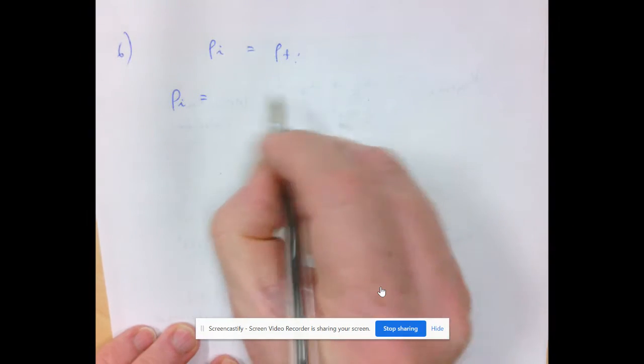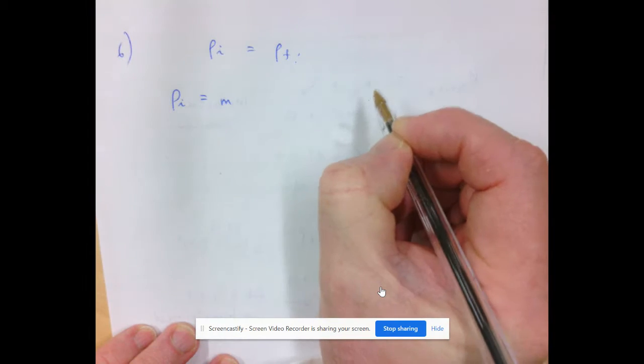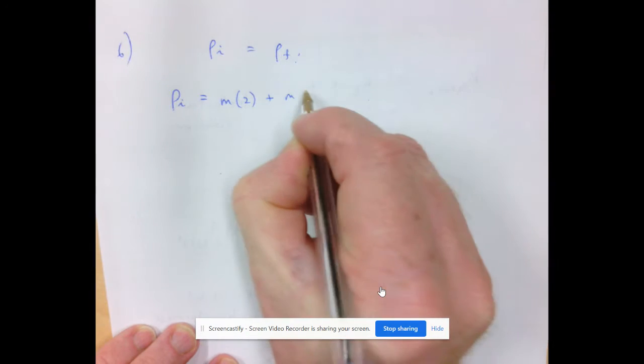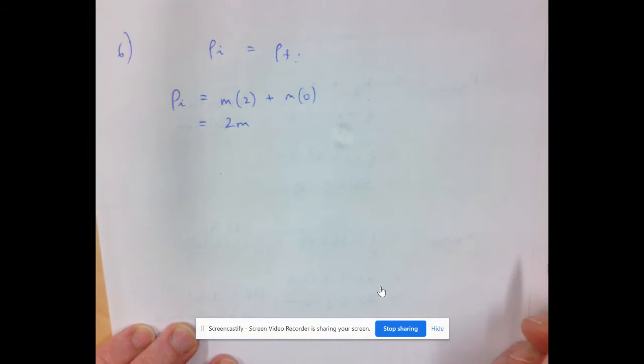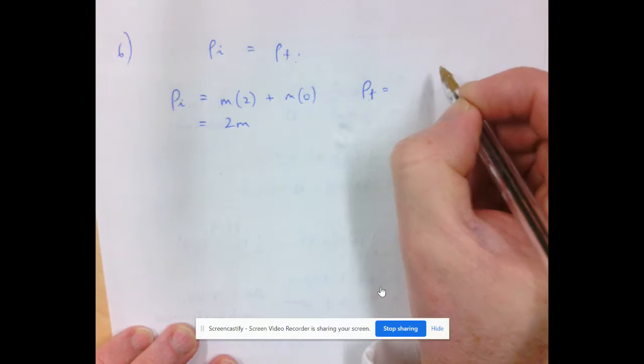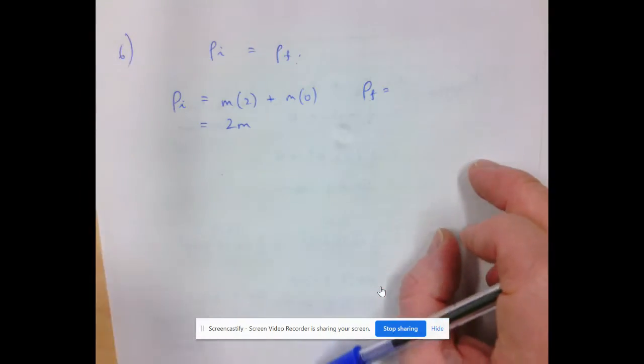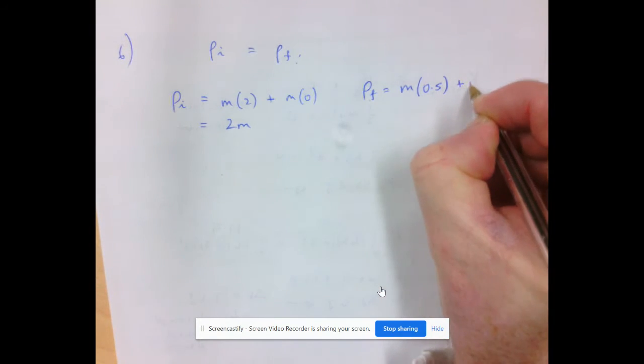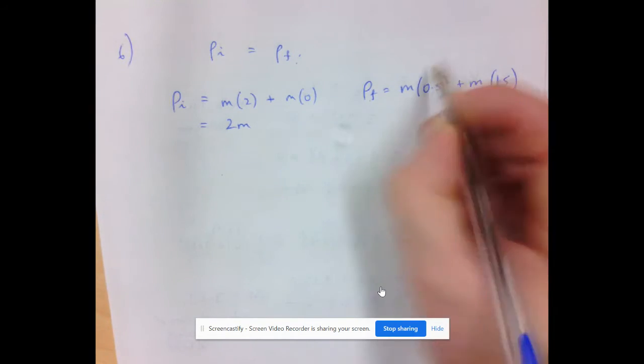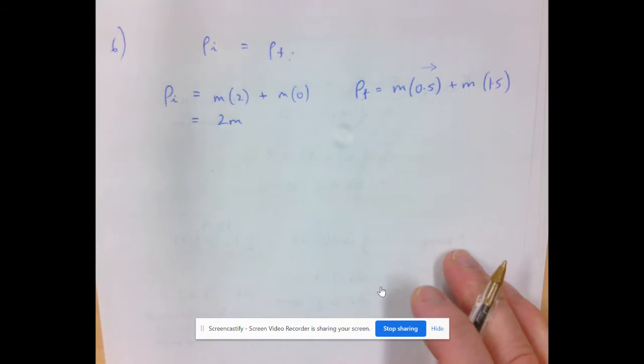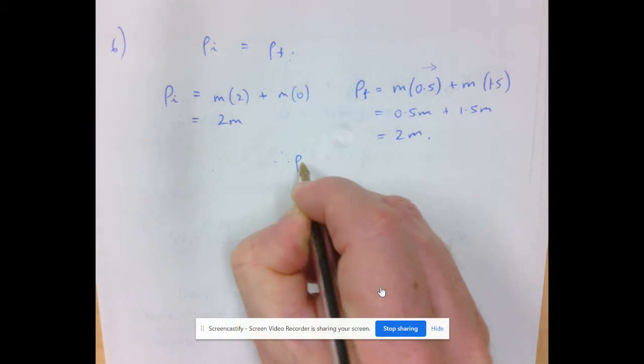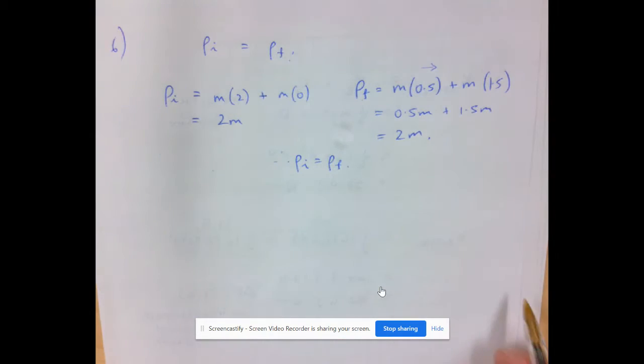So what's the momentum initial? We don't know the mass of the ball, so we're just going to say it's m, and we know the velocity of the first ball is 2, and the second one's mass is also m, but the velocity is 0. So the initial momentum is 2m. The final momentum, according to our diagram, the velocities of each of these balls is shown. The first ball has a mass of m and it's now traveling at 0.5, and the second ball also has a mass of m and it's traveling at 1.5. That is 0.5m plus 1.5m, which equals 2m. Therefore, momentum before is equal to momentum final, and therefore conserved.